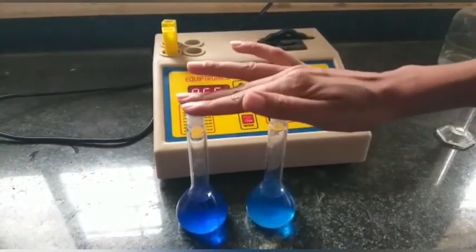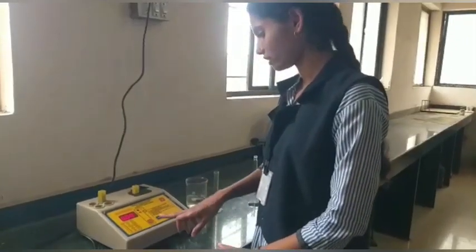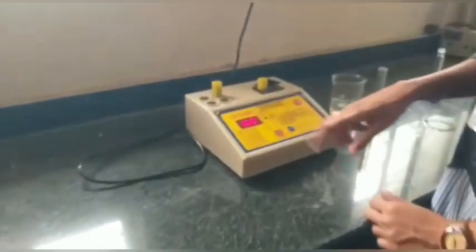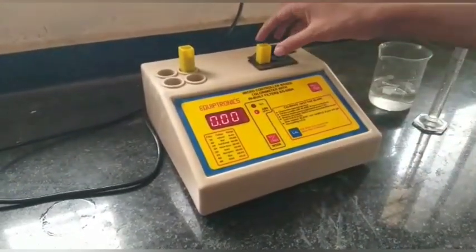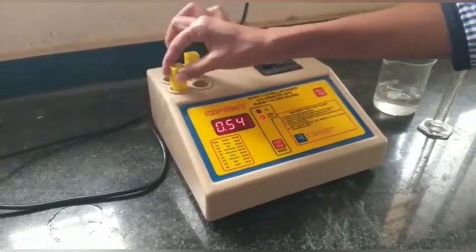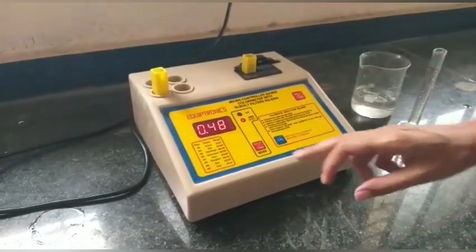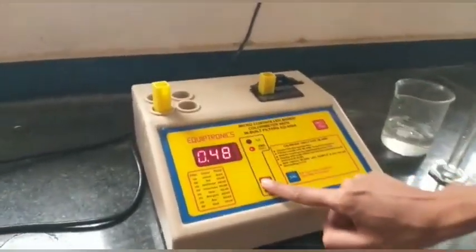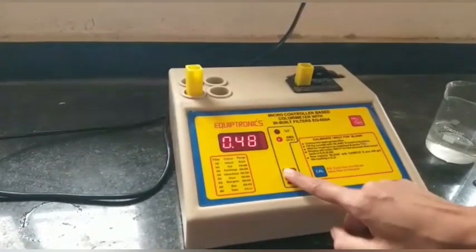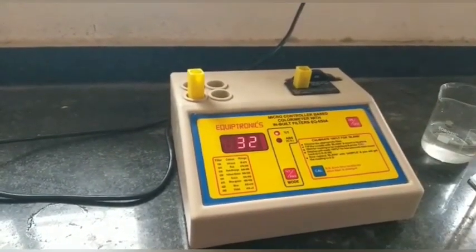For distilled water, we can see transmittance at 100 and absorbance at 0.00. Now for higher level, absorbance shows 0.48 at 620 nanometers and transmittance at 33. For lower absorbance, the lower solution shows 0.15.